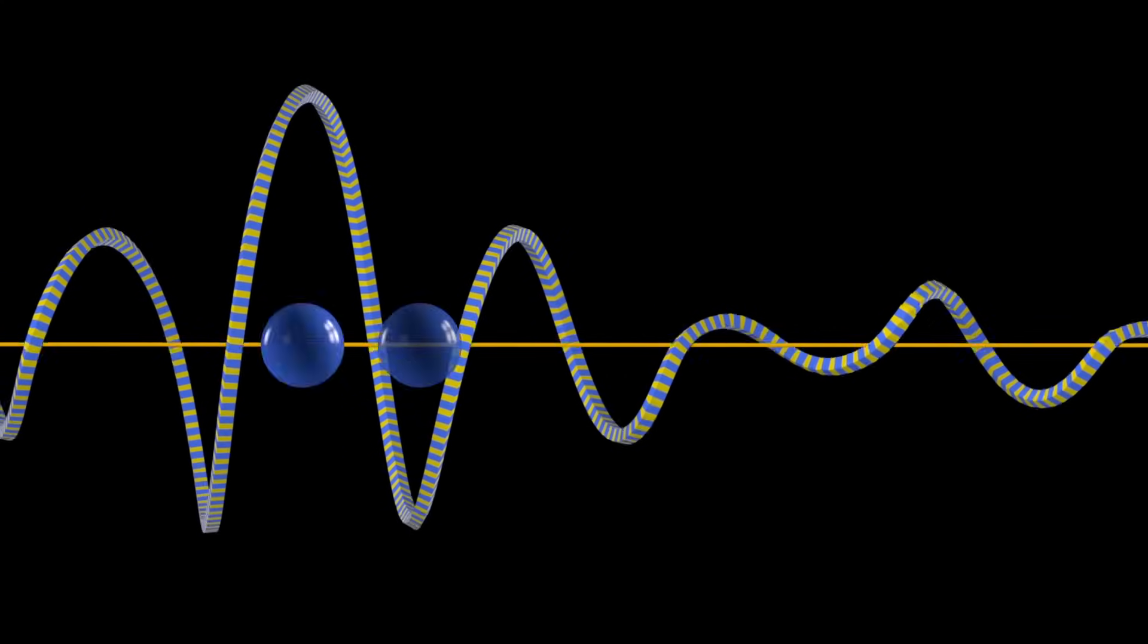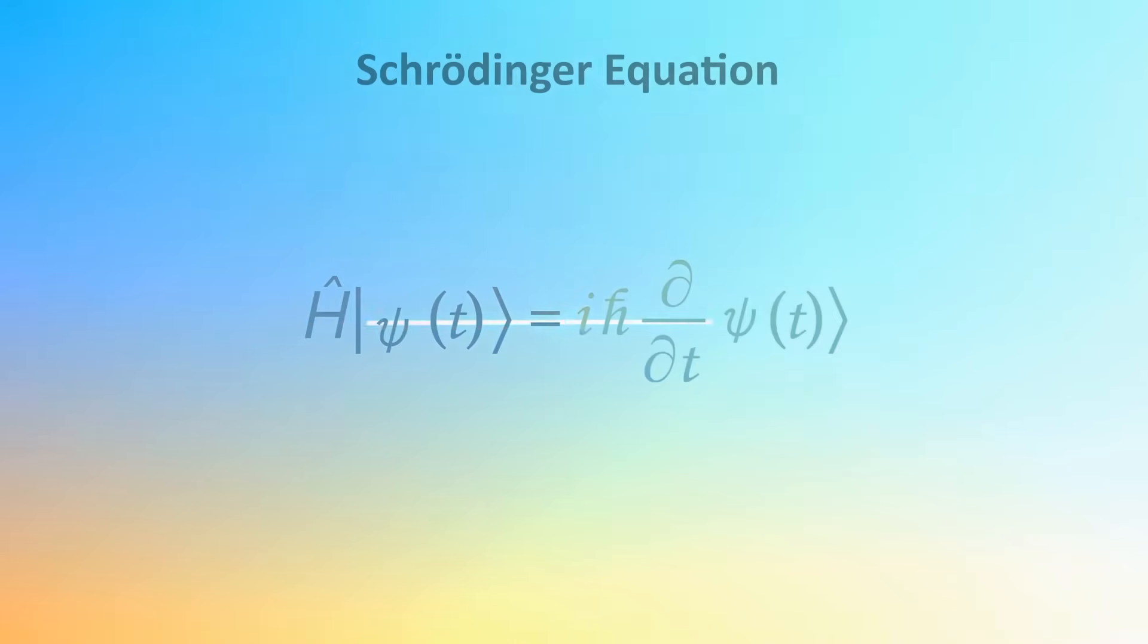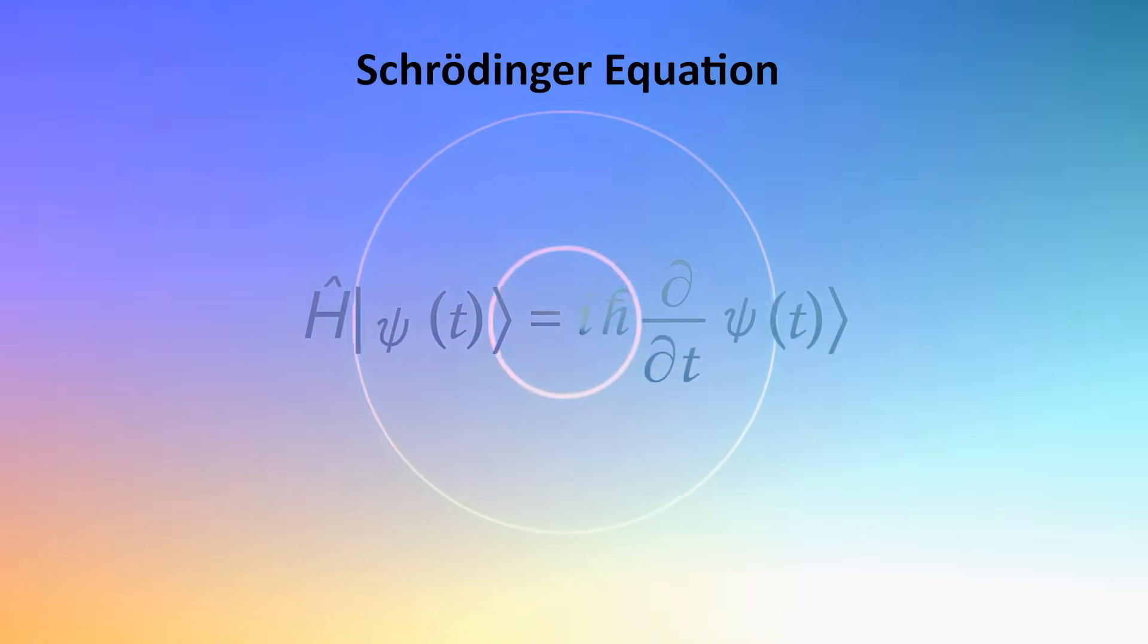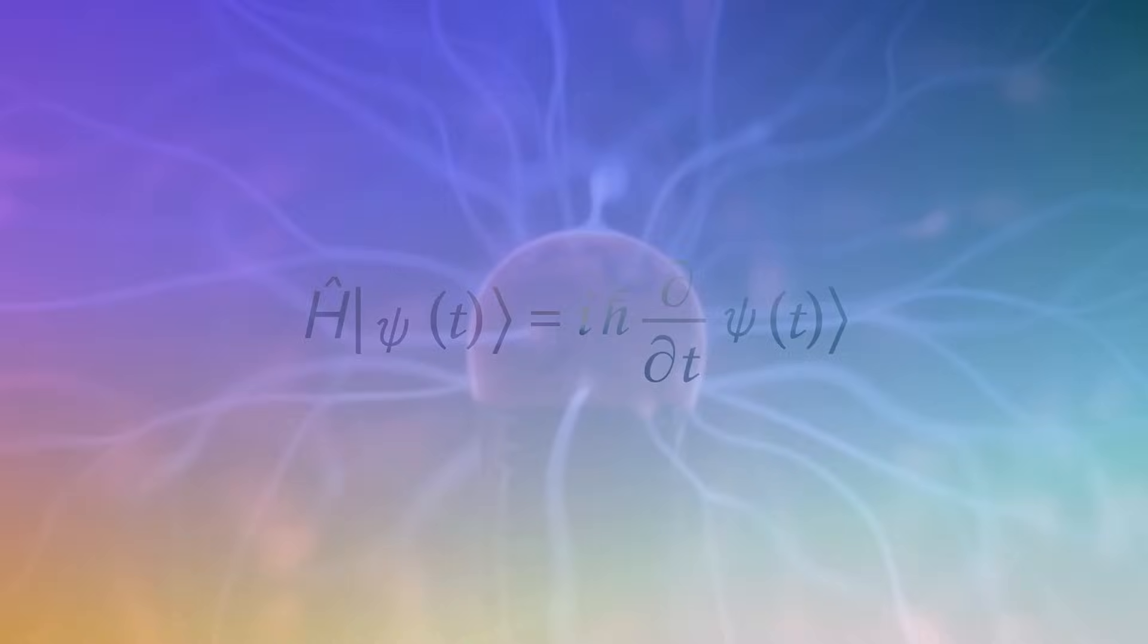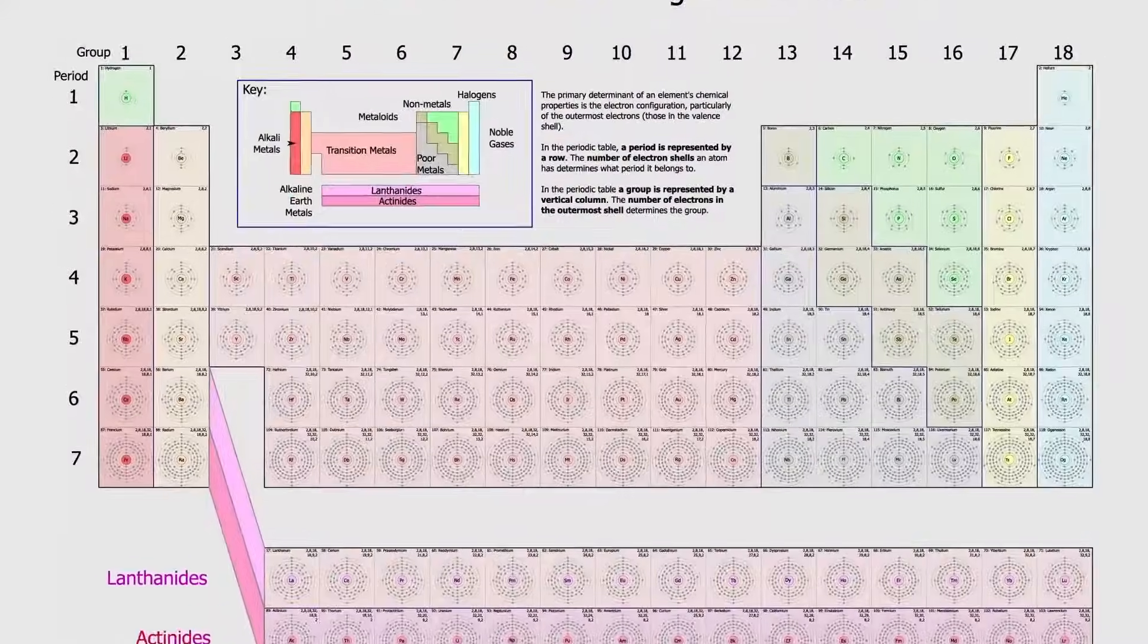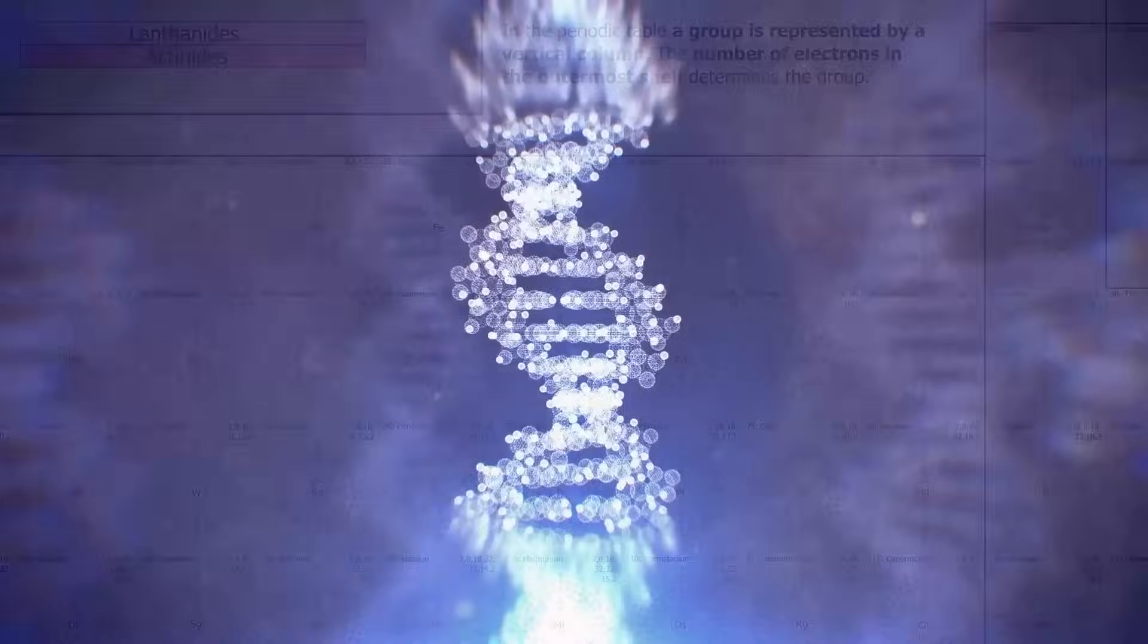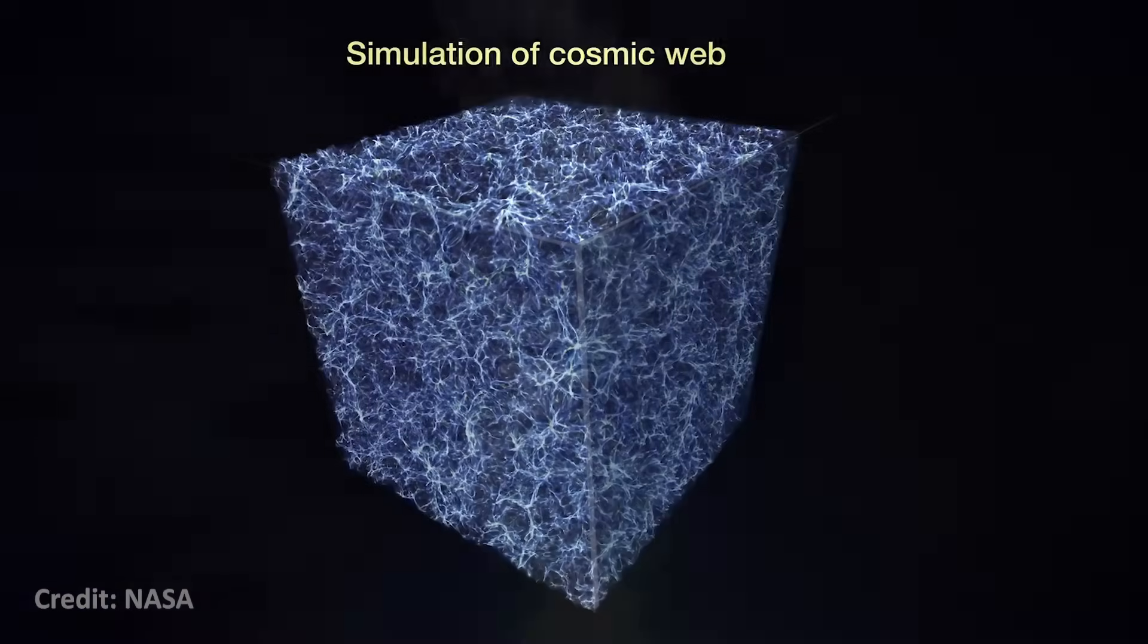Quantum mechanics is one of the most successful theories in all of science. Using its mathematical equations, scientists can accurately predict how tiny particles like photons of light and electrons in electrical currents behave. It can be used to explain everything from the atomic structure of the elements to the shapes of molecules to the cosmic structure of the universe.